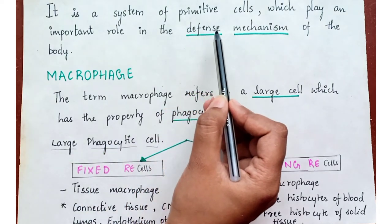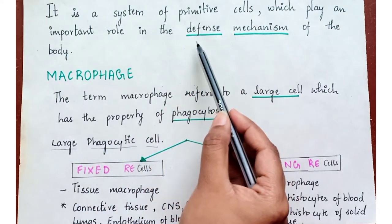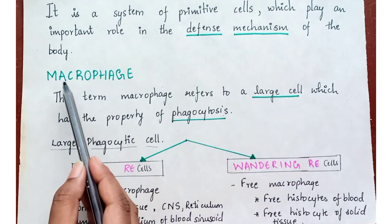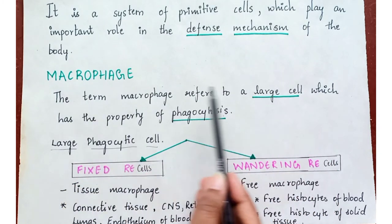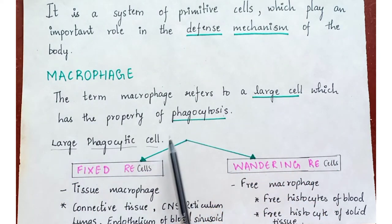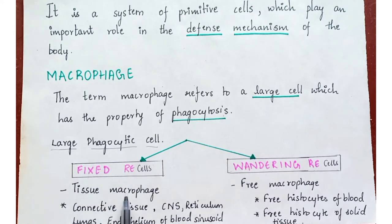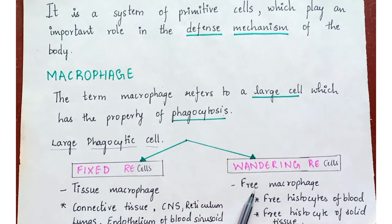To summarize: the reticulo-endothelial system is important in defense mechanism. The macrophage is important — it is a large cell with the property of phagocytosis and is of two types: fixed, which are found in tissues, and wandering, which move freely into lumens.